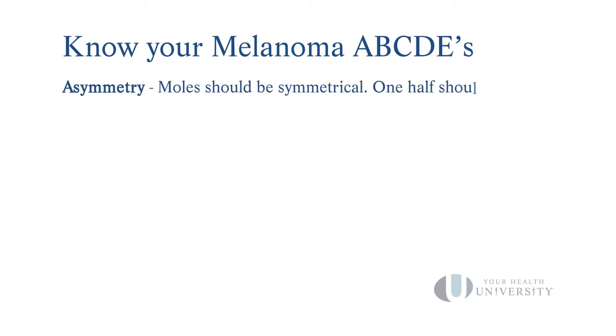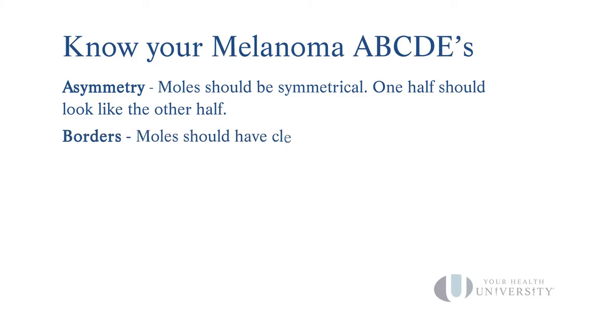A stands for asymmetry. We want one half of a mole or lesion to look like the other half. B is borders. We want to be able to clearly tell where a mole starts and where a mole stops. If you can't really decide where a mole stops or starts, that is concerning.